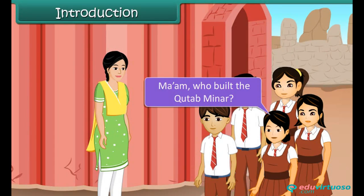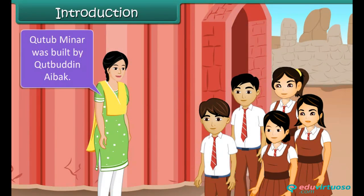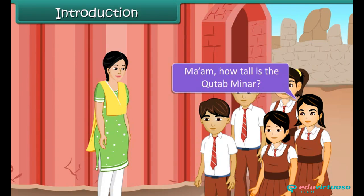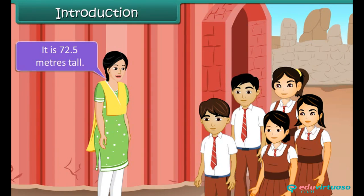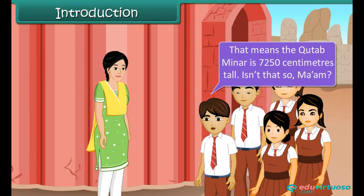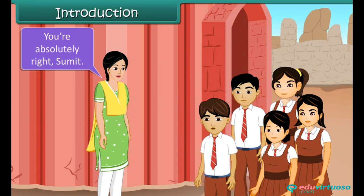A student asks the teacher who built the Qutub Meenar. The teacher answers that it was built by Qutubuddin Aibak. Another student asks how tall the Qutub Meenar is, and the teacher says it is 72.5 meters tall. A student named Sumit notes that this means the Qutub Meenar is 7,250 centimeters tall, and the teacher confirms he is absolutely right.